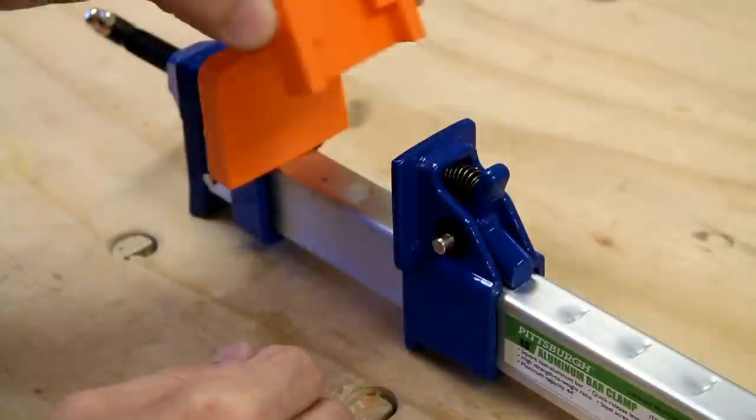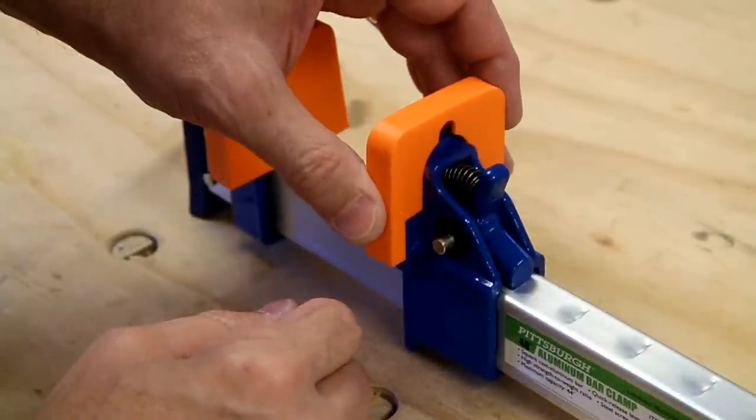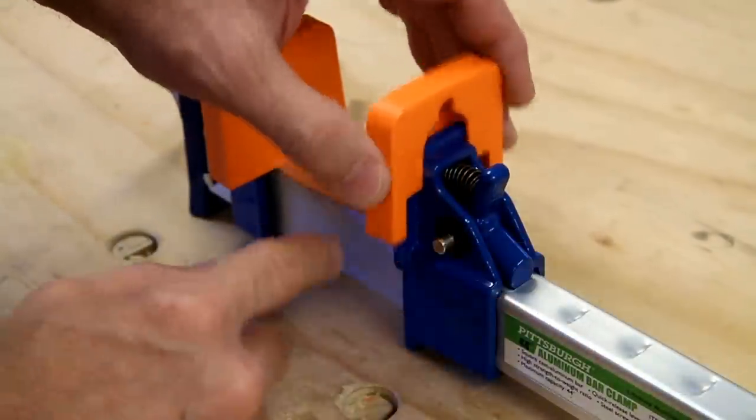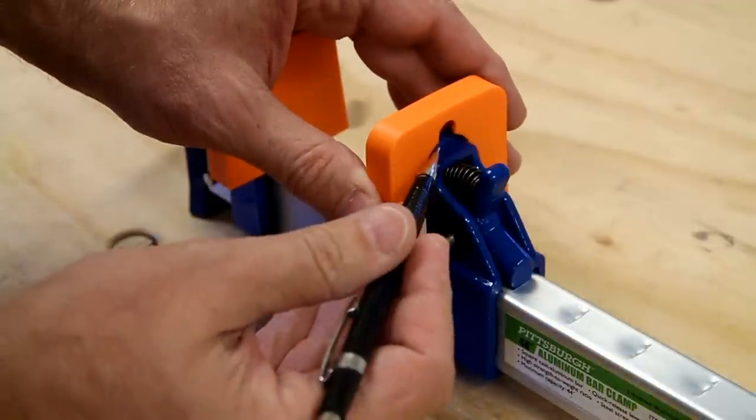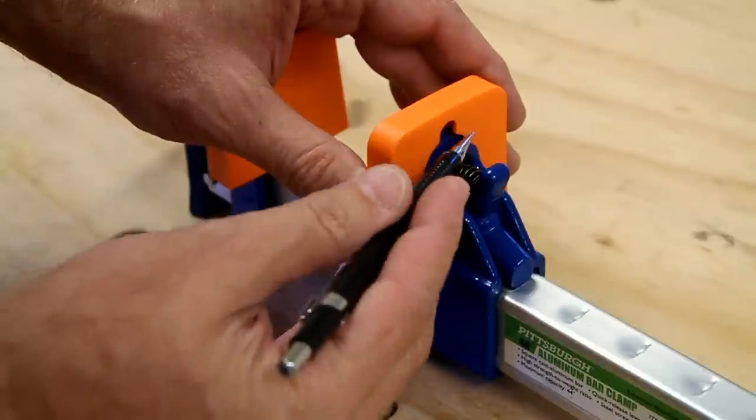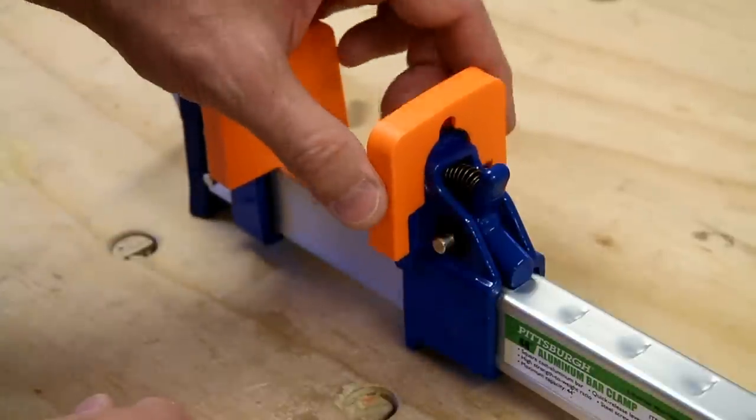For the movable jaw, it doesn't fit quite as nicely, because this is a bit longer. What you need to do is just cut out this corner, and I'll do that with an X-Acto knife.